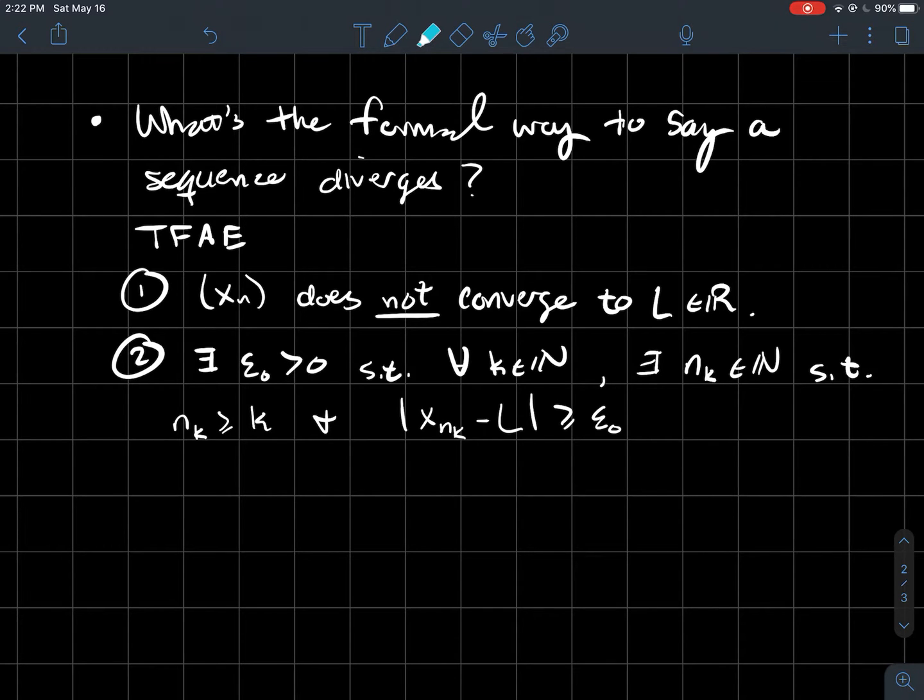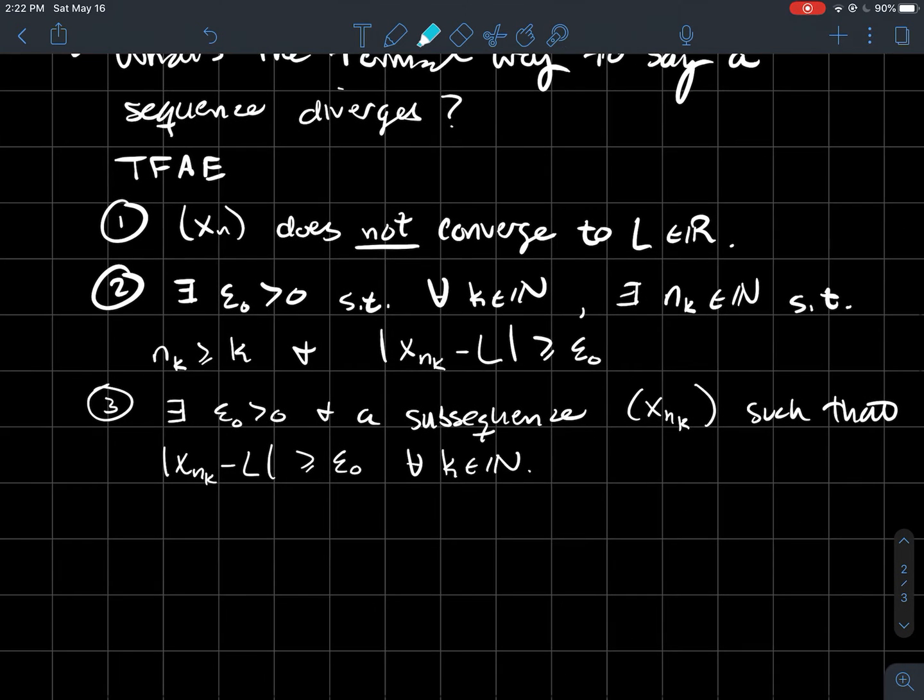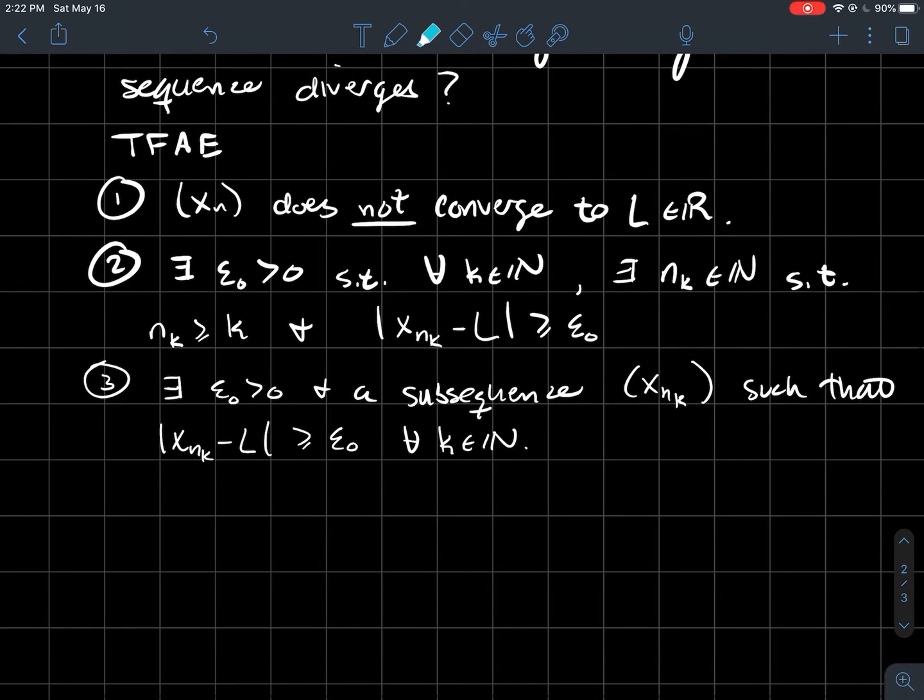And this is all true if and only if, or each of these are equivalent to, again, is what this says. So one, two, and three are equivalent to each other. And so they're all equivalent to this third one down here, which is another way to say number two really.